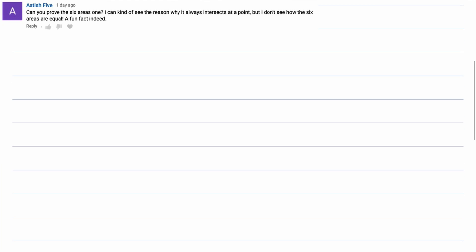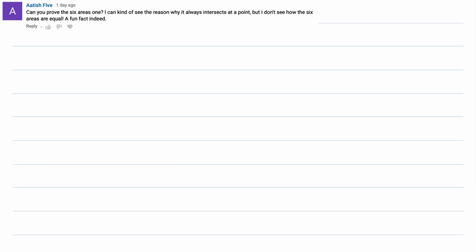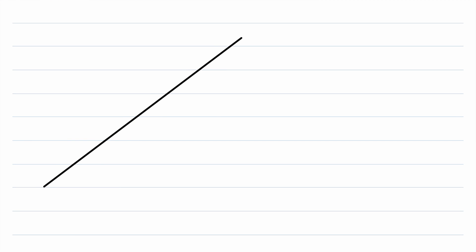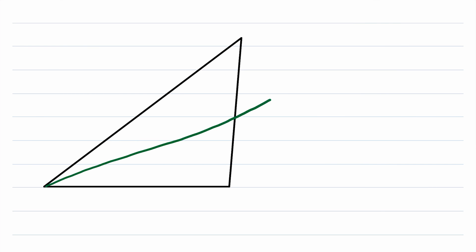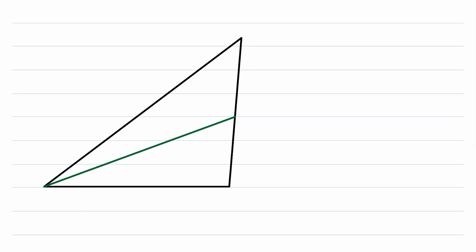This is a viewer requested video — if you have any video requests, be sure to leave them down in the comments. We'll begin by drawing a triangle and making sure we know exactly what this theorem is stating, and then we'll go through a proof of it. It's a very neat property of medians of triangles because it's not something that necessarily appears true at first glance, so a proof is definitely something that's nice to see.